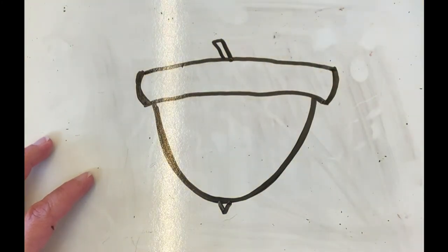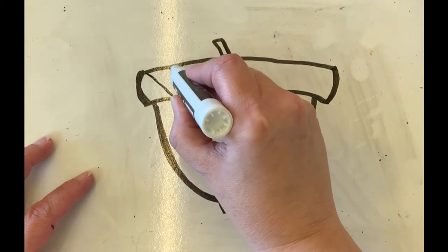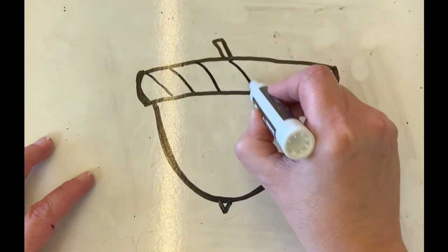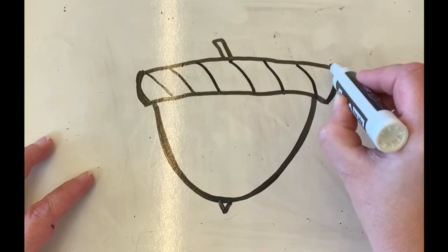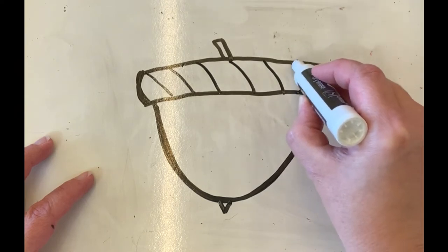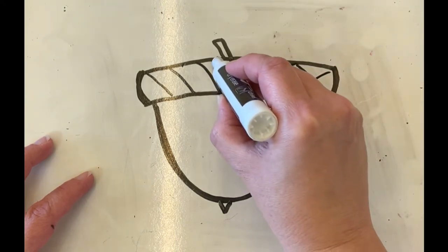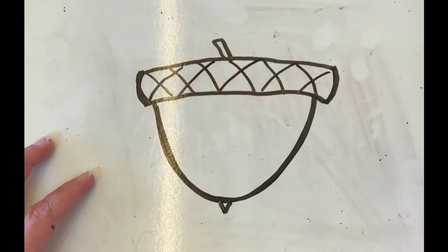The final thing I need is a slanted skinny rectangle. Now I'm making some diagonal lines criss crossing on the top for my acorn cap.